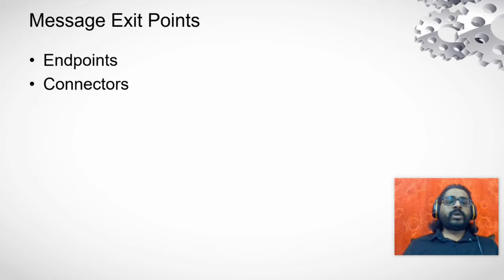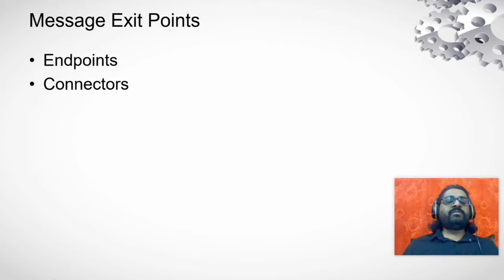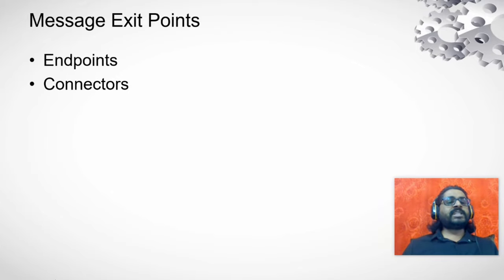There are two types of message exit points: endpoints and connectors. Endpoints are external destinations to which you send your messages — the current message in your runtime is sent to that destination. Connectors are libraries provided by the WSO2 ESB store that you can download and import into your server. Connectors help you integrate with third-party applications — for example, a Salesforce connector so you don't have to write all the mediation code yourself. You import the connector, it has defined mediation operations, and you add those operations into your workspace and configure the values.